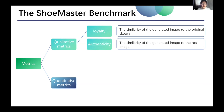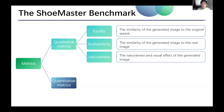The second qualitative metric is authenticity. In the authenticity test, each question presents the ground truth image and synthesized images generated by different translation models. Respondents need to choose the generated image which is closest to the ground truth. The third qualitative metric is naturalness. In the naturalness test, respondents are given different images generated by different models based on the same sketch and asked to choose the image with the most natural and best visual effect.